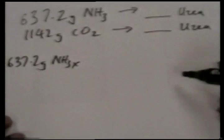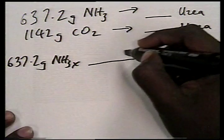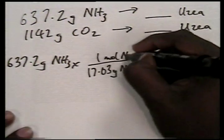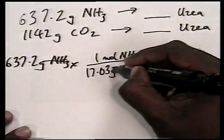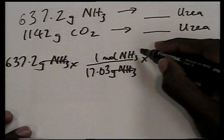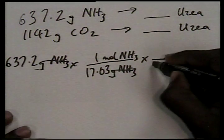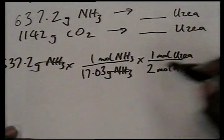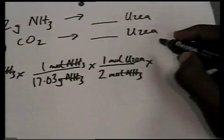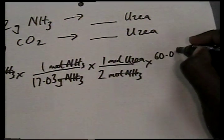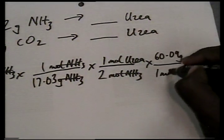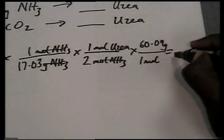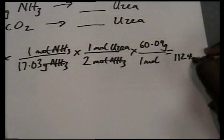So, if you have the mass, to find the moles of ammonia, you would need the molar mass, which is 17.03 grams of NH3 per mole of NH3. Okay? So, when I do the math here, it would help me find the moles of NH3. And then, once I have the moles of NH3, I use my ratio between ammonia and urea to find the moles of urea. And finally, I'll use my molar mass of urea to find the grams of urea. So, if I do all the math here, I will end up getting 1,124 grams of urea.